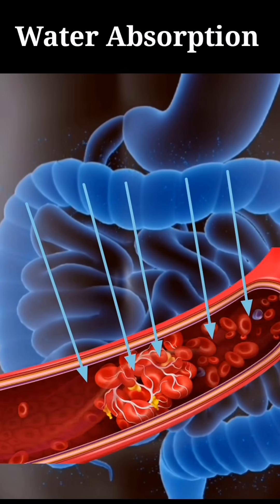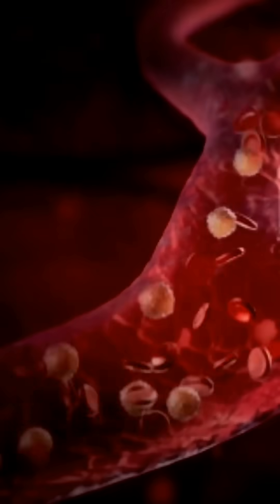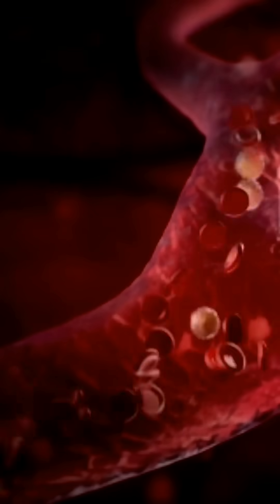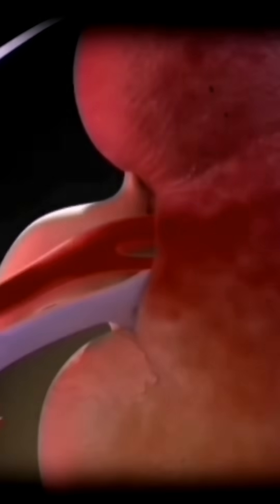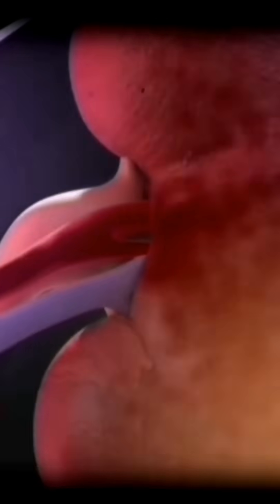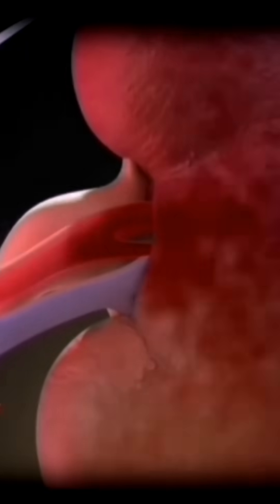This blood then circulates within our body, providing hydration to our cells. During this process, certain waste materials from the cells also enter the bloodstream. Once the blood carrying these substances reaches our kidneys, the kidneys filter it and produce urine.